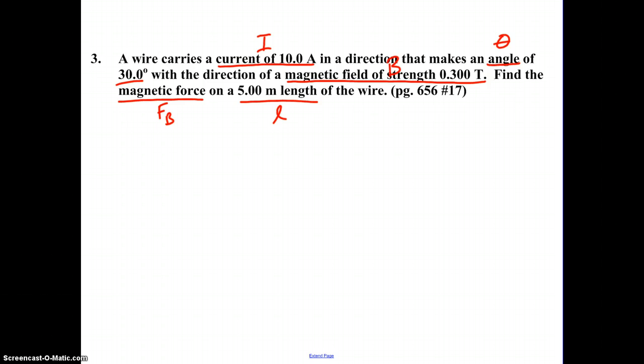The equation that relates the variables that were given to us, and what we're asked to find, which is the strength of the magnetic force, is FB equals BIL sine theta. In this problem, the wire is not directed perpendicular to the magnetic field, therefore, we are not going to be maximizing the force on that wire, since it is angled at 30 degrees with the magnetic field.